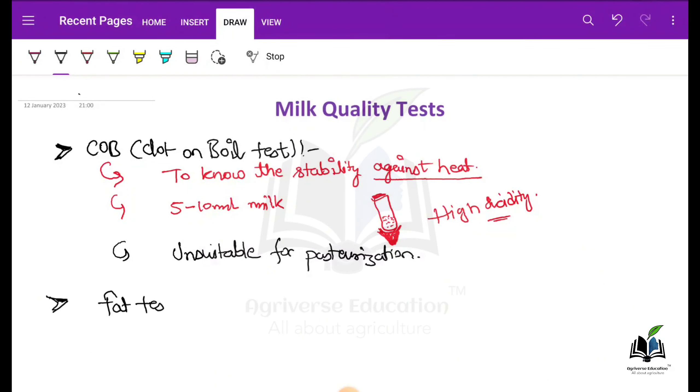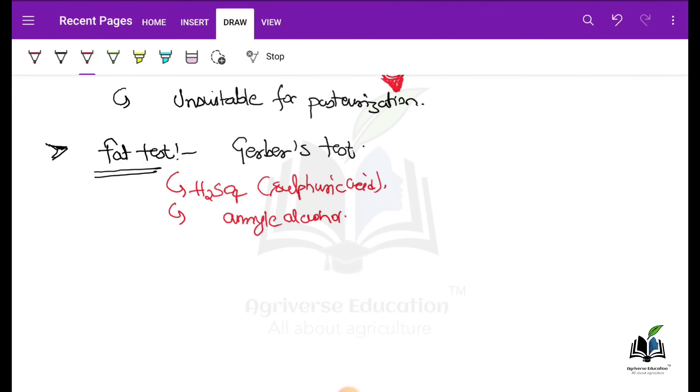Second method is fat test. In this test, it is also known as Gerber test. Sulfuric acid is used as well as amyl alcohol. Here 10.75 ml of milk is used. This is important because the amount of milk sample is fixed, that is 10.75 ml, and 10 ml of H2SO4 is used plus 1 ml of amyl alcohol.